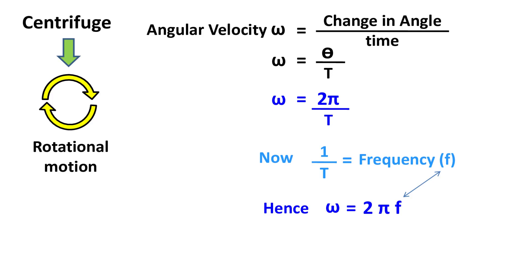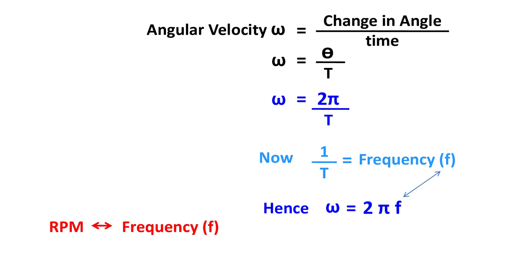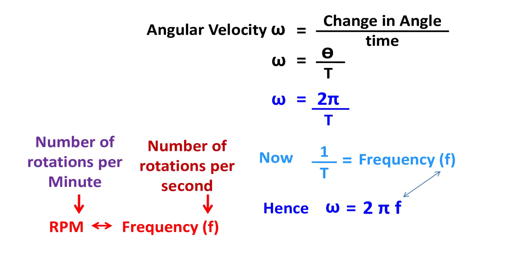The question is, what is the frequency of the centrifuge? In a centrifuge, the rotational motion of the rotor is measured as RPM, which is the number of revolutions per minute. Notice carefully — RPM is almost the same as frequency. The only difference is that RPM is measured in terms of minutes, whereas frequency is measured in terms of seconds. RPM is revolutions per minute and frequency is revolutions per second. So RPM divided by 60 equals frequency f.